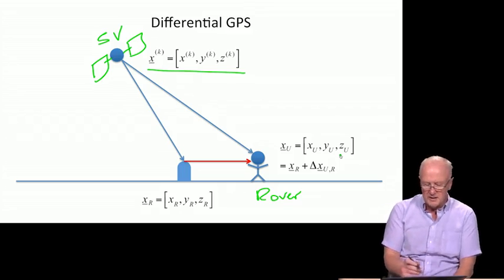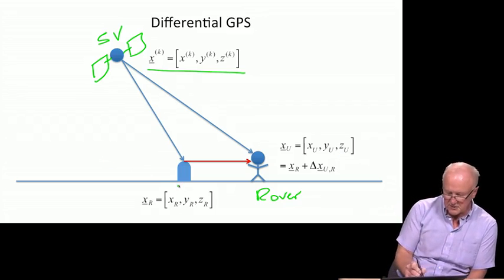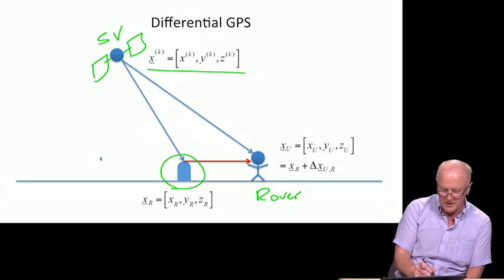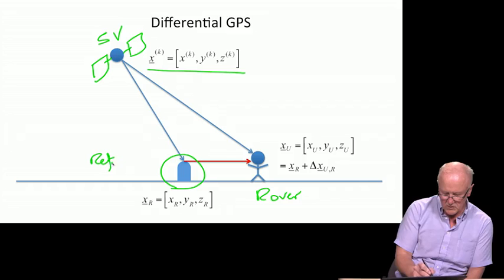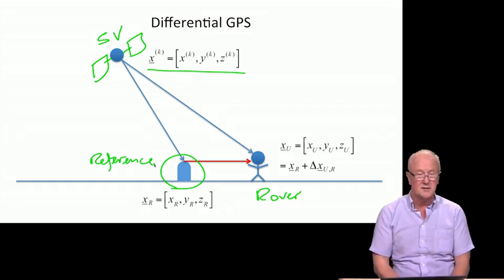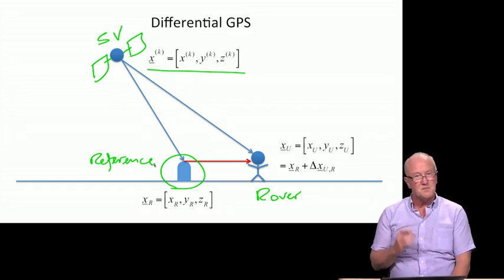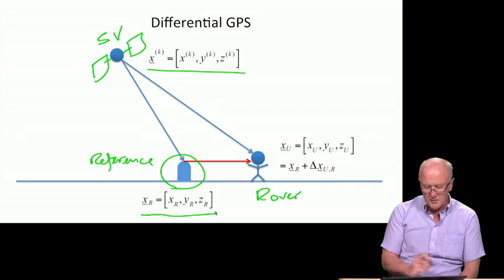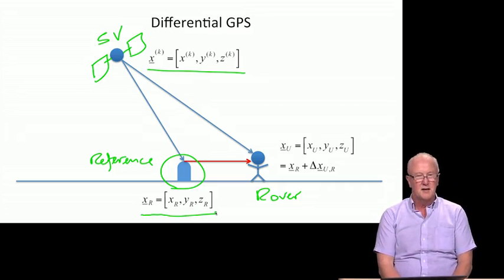And so that's this object here, shown with a dome antenna on top of a building, let's say. And this is a second GPS receiver. The thing that's special about it, is we can call it a reference, because it's at a known reference location. And that location is xr, which we have once again broken into the three components of position, xr, yr, zr.